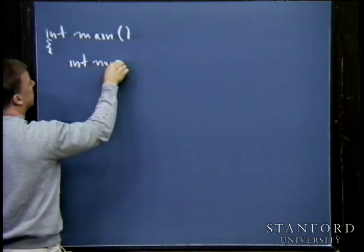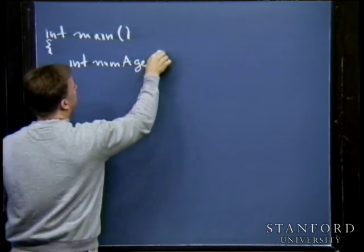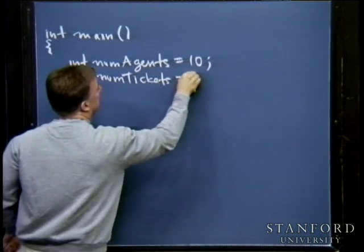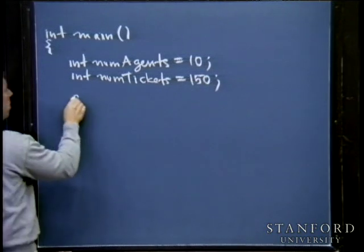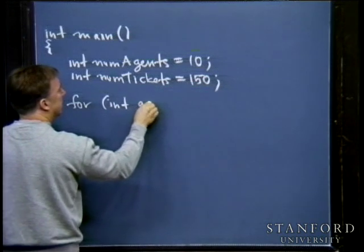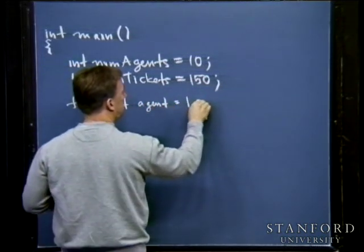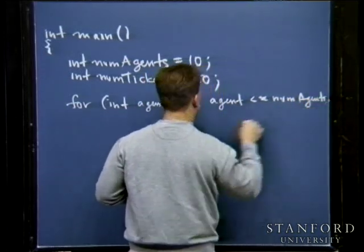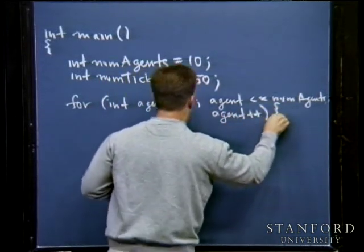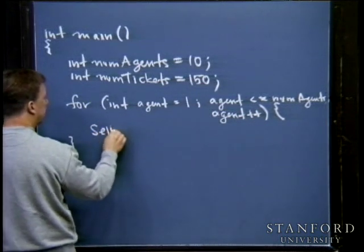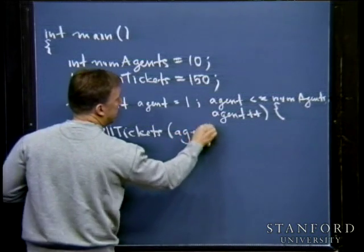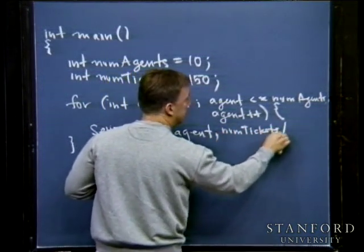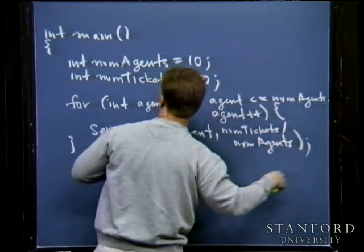I went ahead and wrote something like this — num_tickets equals 150. In a brute-force for loop, I wrote: agent equals one, agent less than or equal to num_agents, agent plus plus. Inside, I called a function called sell_tickets, parameterized in terms of the agent ID and num_tickets divided by num_agents, so each ticket agent knows how many tickets they have to sell.